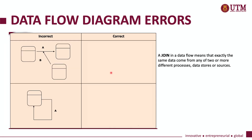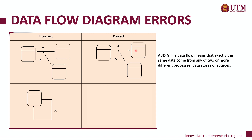Another common error is when you have a data flow called a join. This is similar to the fork error: data flows that join must represent the same data. Meaning the same data coming from process one and process three is going into process two — process two needs that same data from both process one and process three. Remember, it must be the same data flow.